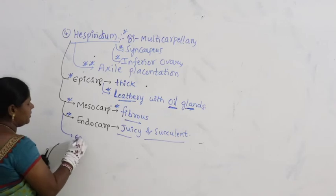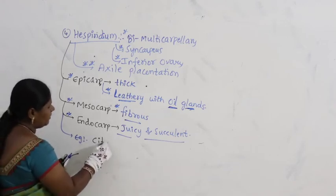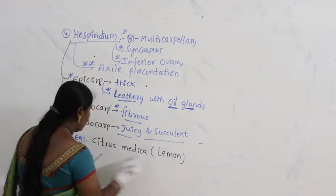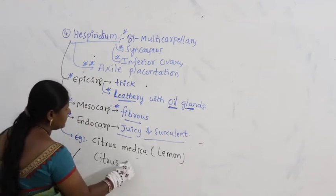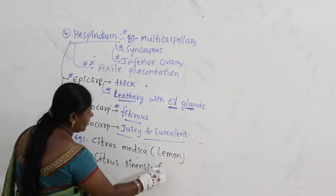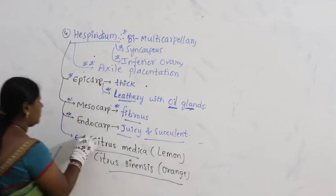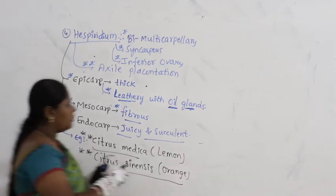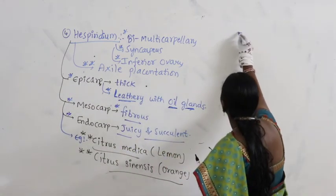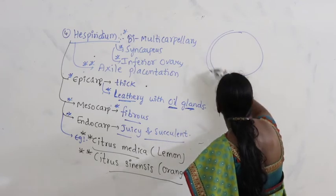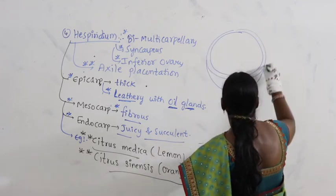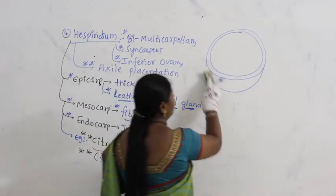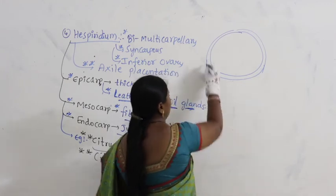Examples for hesperidium: Citrus medica — commonly called lemon — and Citrus sinensis — commonly called orange. In the diagram, the outermost layer is epicarp, the middle layer is mesocarp, and inside you find placenta with axial placentation.